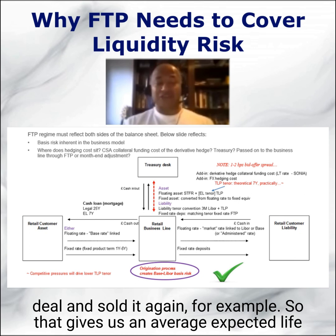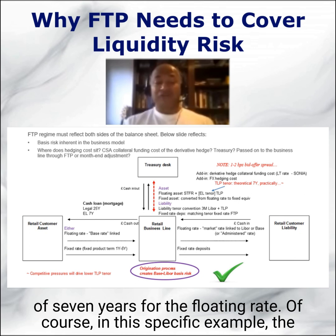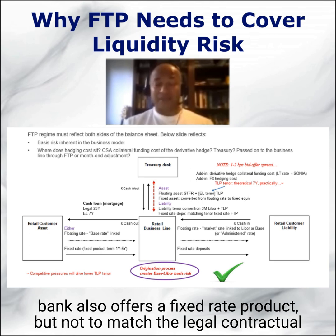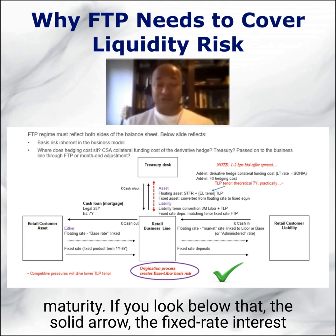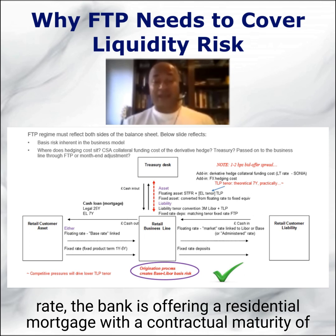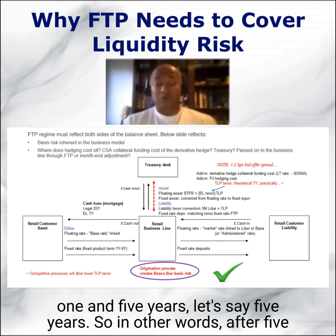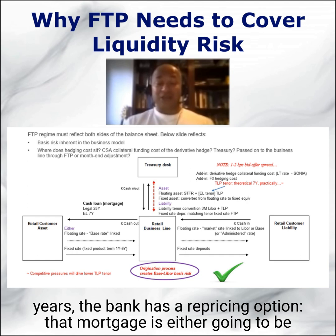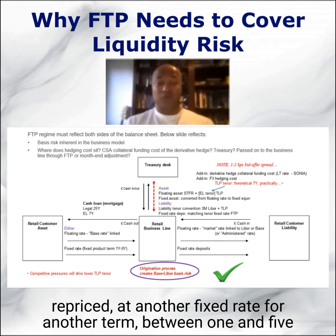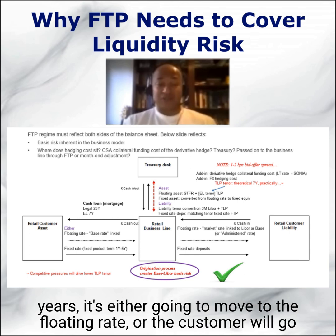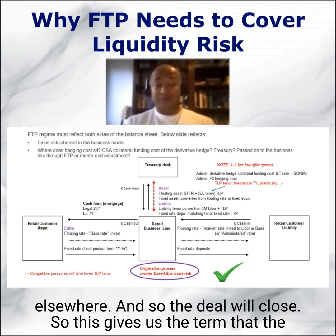That gives us an average expected life of seven years for the floating rate. In this specific example, the bank also offers a fixed rate product, but not to match the legal contractual maturity. The fixed rate interest rate — the bank is offering a residential mortgage with a contractual maturity of 25 years, but it is fixed at a fixed interest rate for between one and five years, let's say five years. So after five years, the bank has a repricing option. The mortgage is either going to be repriced at another fixed rate for another term between one and five years, it's either going to move to the floating rate, or the customer will go elsewhere and the deal will close.